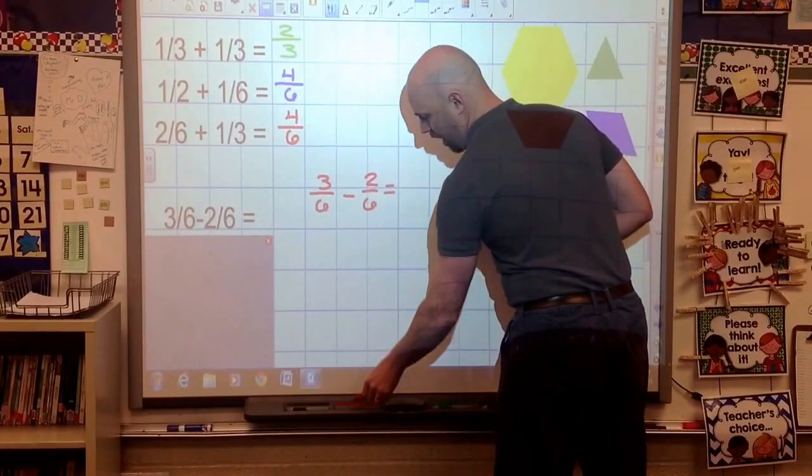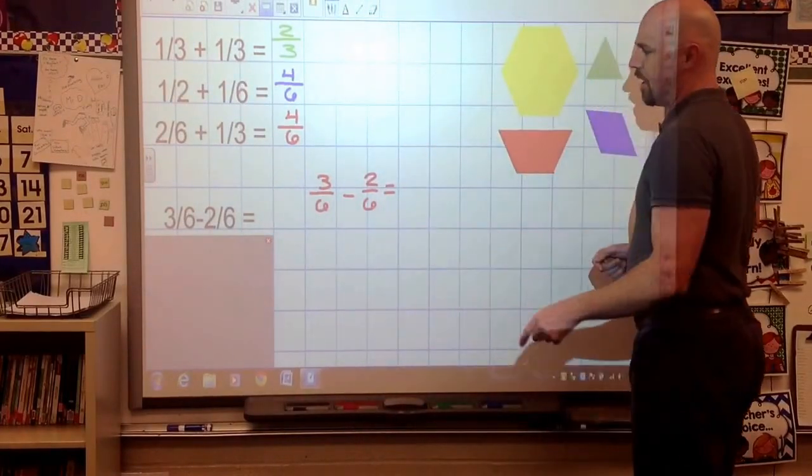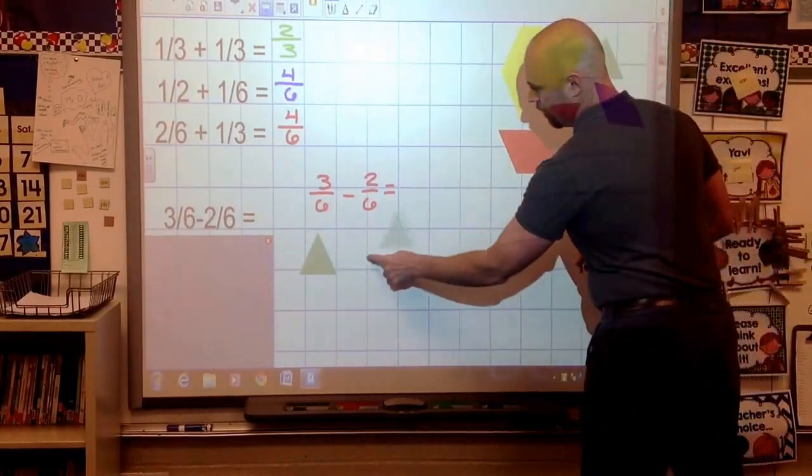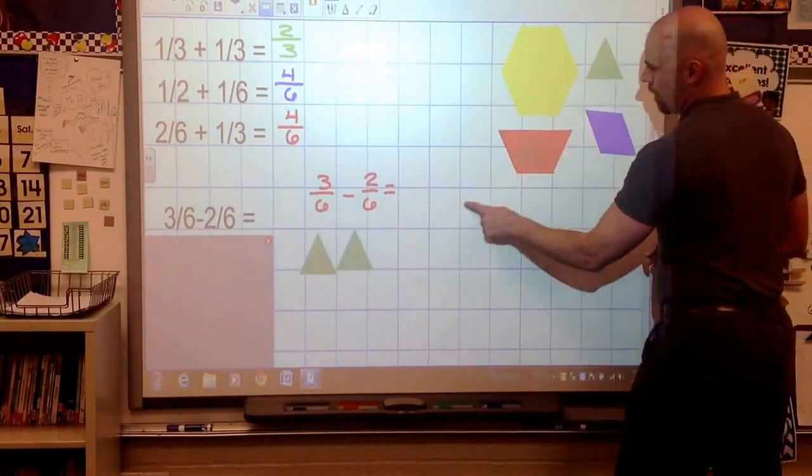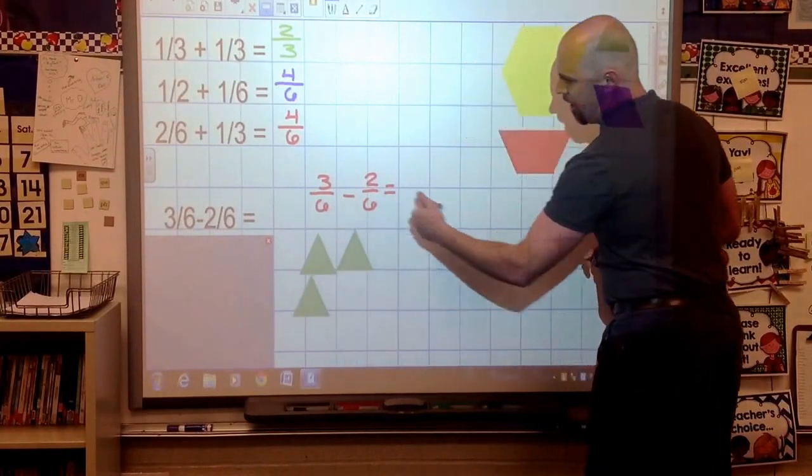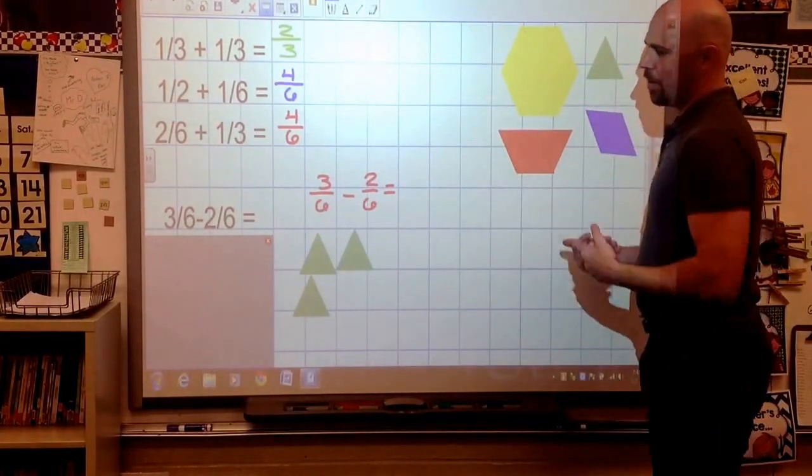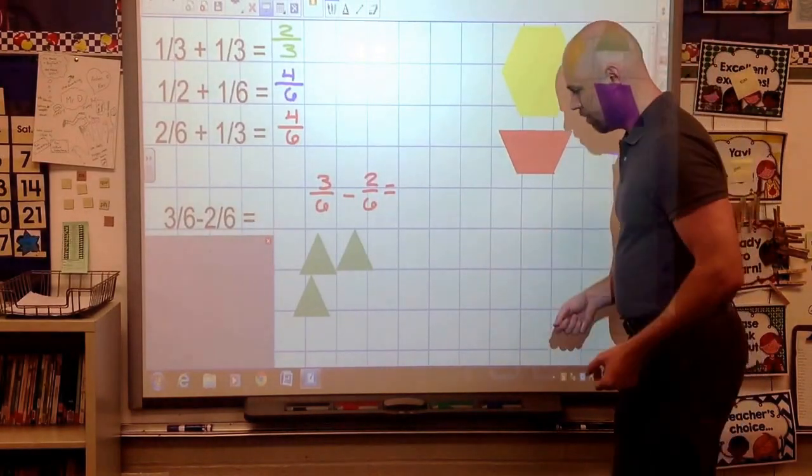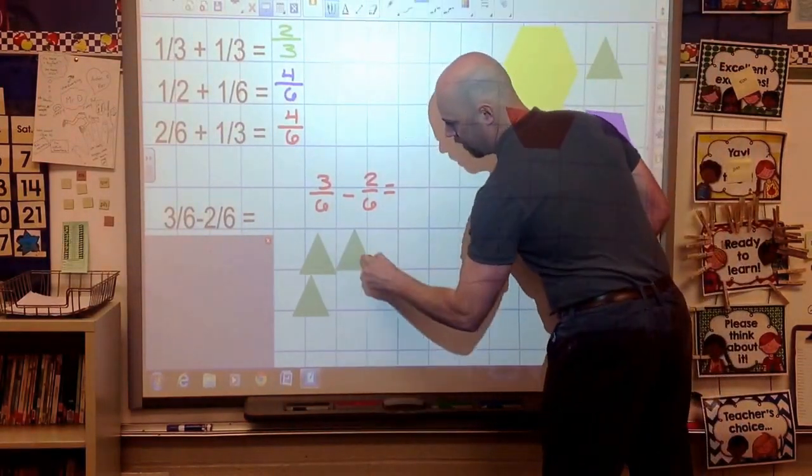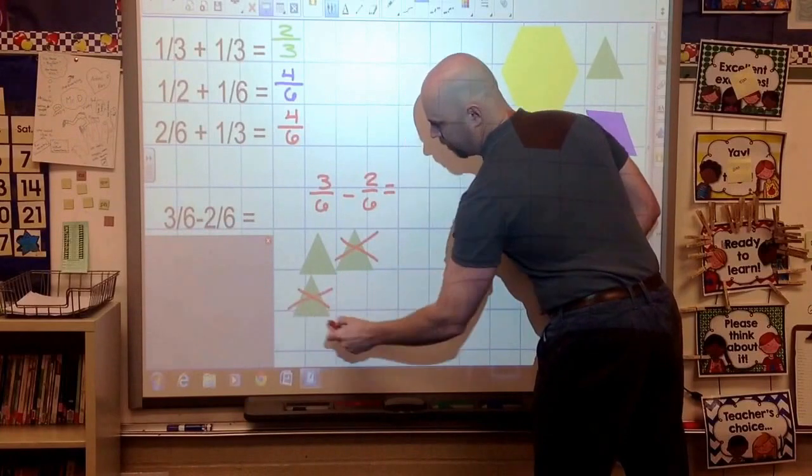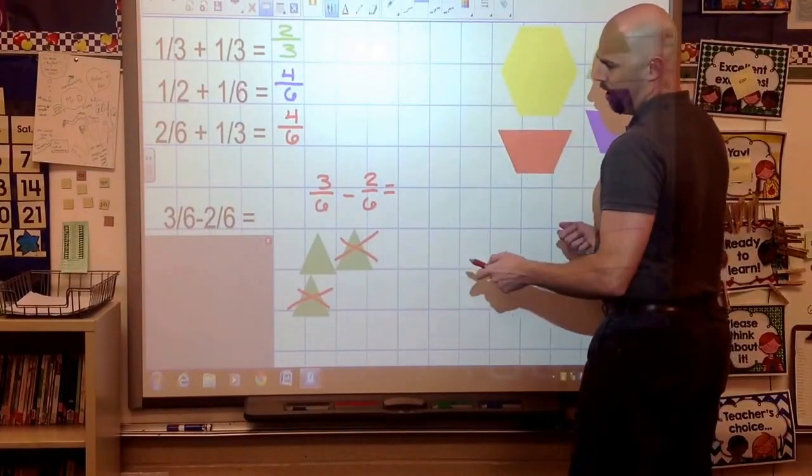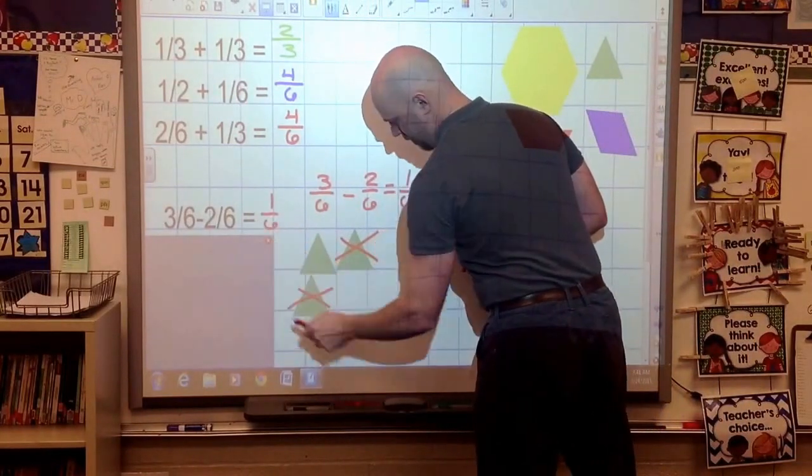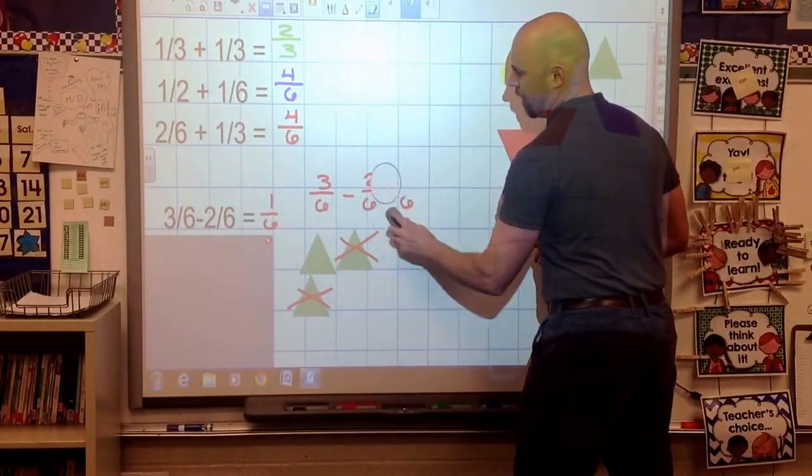Now I know a lot of kids are going to tell me, well, 3/6 is 1/2. I go, okay, but let's use the name that they're talking about here. So one, two, three. I have 3/6 there, and I'm going to eliminate 2/6. Like we said, when you have like denominators, those are the easiest problems. So take away two of them, what do I have left? I have 1/6. That makes a pretty easy problem for us when we have like denominators.